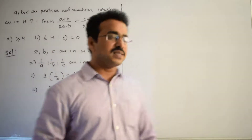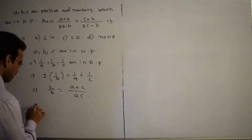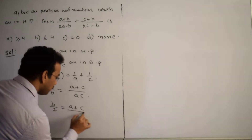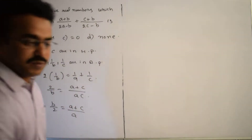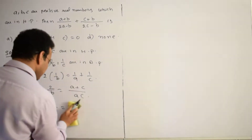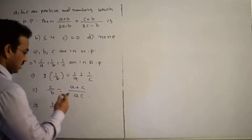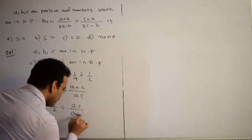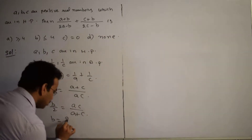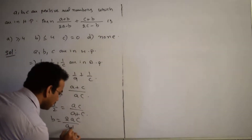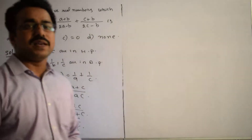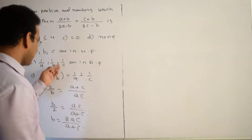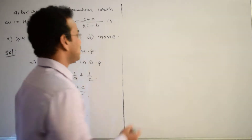Taking the reciprocal, this implies B/2 = AC/(A + C), which gives B = 2AC/(A + C). When A, B, C are in harmonic progression, you can directly write this result. I proved it here. In the next step, we will evaluate the expression.